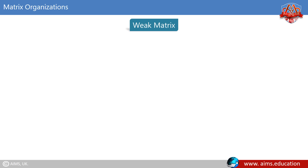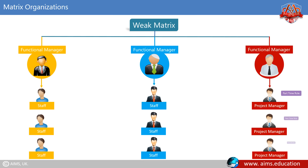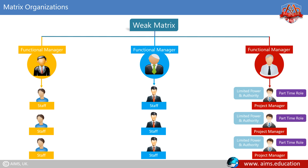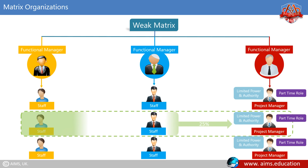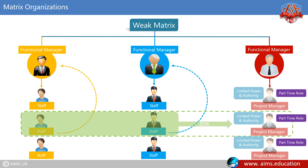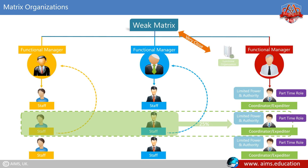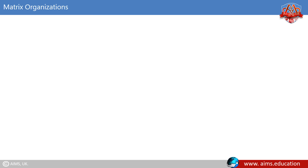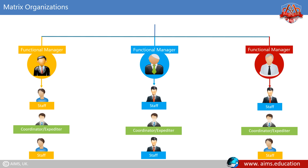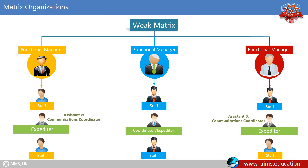In a weak matrix, the project manager has a part-time role with very limited power and authority. Team members are only assigned to projects for 25% or less of their time; for the rest of the time, they return to functional assignments. The role of project manager is more like a coordinator or an expediter. The project expediter works as a staff assistant and communications coordinator but does not make or enforce decisions. Project coordinators make some decisions because they have some authority and report to a higher-level manager.